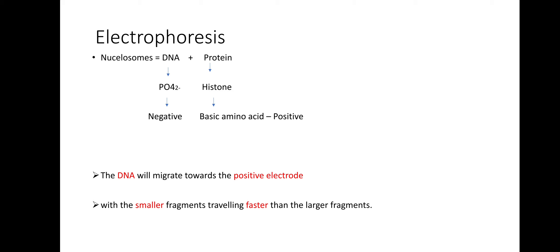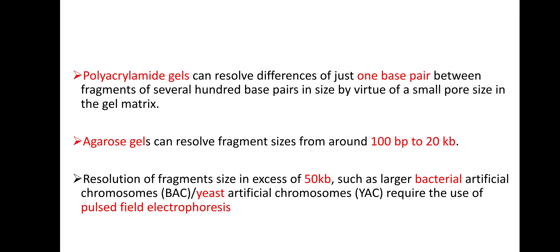Electrophoresis: DNA is composed of phosphate, which is negatively charged, while protein is composed of histone, which is a basic amino acid that is positively charged. DNA migrates towards the positive electrode, with smaller fragments traveling faster than larger fragments. Polyacrylamide gels can resolve differences of just one base pair between fragments of several hundred base pairs by virtue of small pore size in the gel matrix. An agarose gel can resolve fragment sizes around 100 base pairs to 20 kilobase pairs. Resolution of fragment sizes in excess of 50 kilobase pairs, such as bacterial artificial chromosomes or yeast artificial chromosomes, requires pulsed-field electrophoresis.